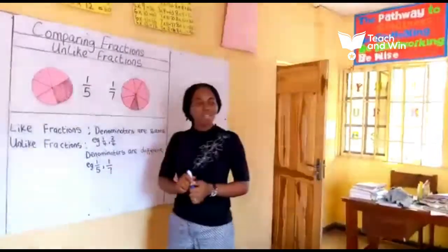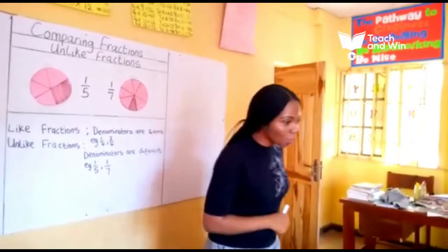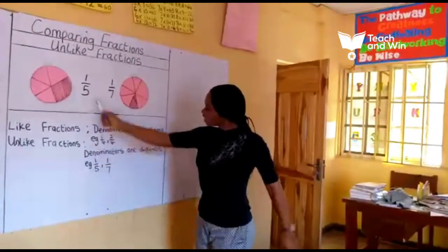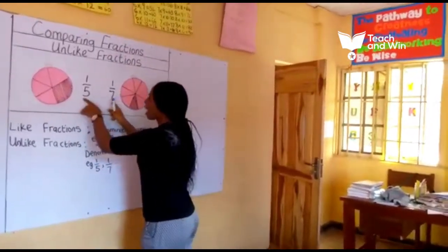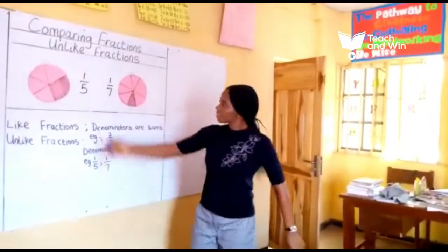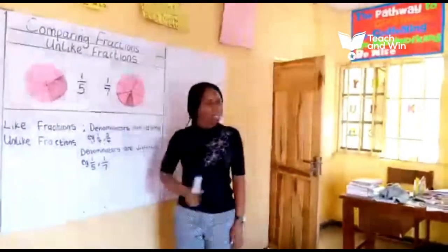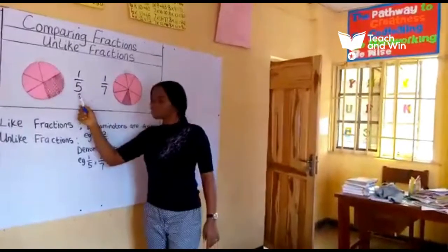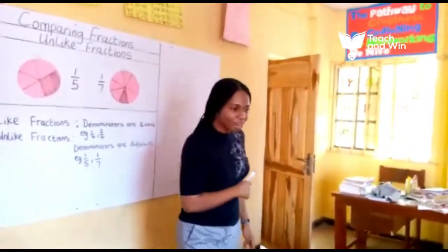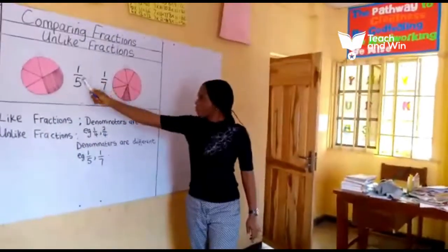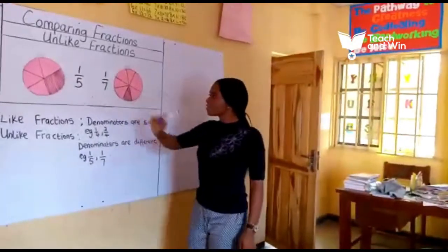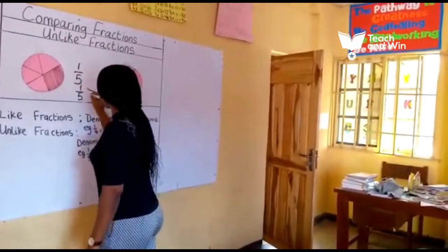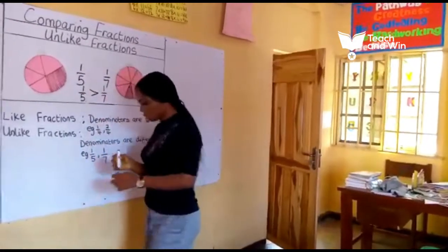Remember, we are learning about unlike fractions. Now look at these two fractions — did you notice that these two fractions have their denominators as different? This is one fifth, while this is one seventh. When you are comparing unlike fractions, the fraction with the smaller denominator is the greater fraction. So one fifth is greater than one seventh.